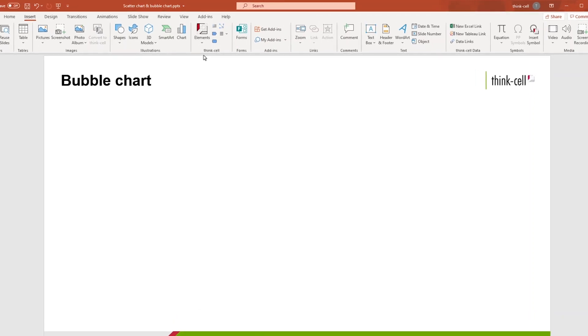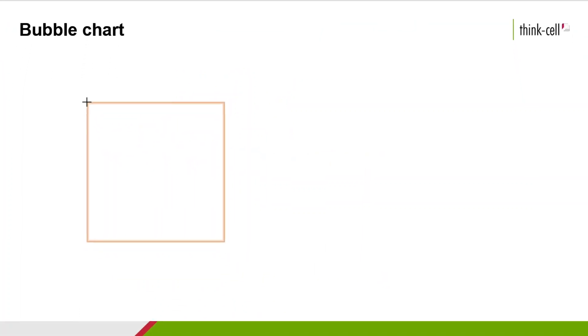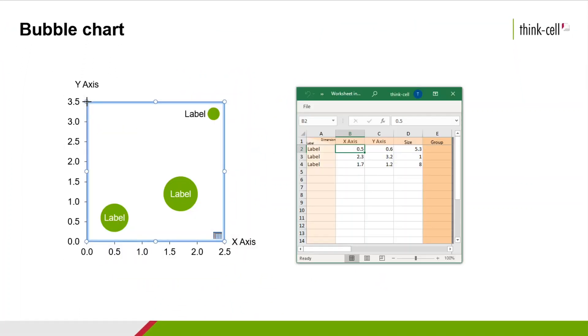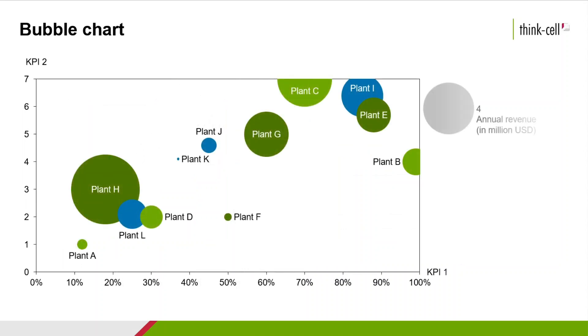To insert a bubble chart from scratch, open the Elements menu, select Bubble, and click onto the slide once. But let's return to the previous example and assume you would like to augment your chart by adding annual revenue as a third data series to it. Thus, you transform your scatter into a bubble chart in which the size of the bubbles represents the annual revenue.